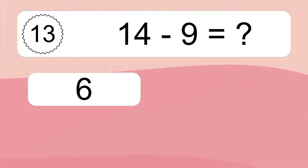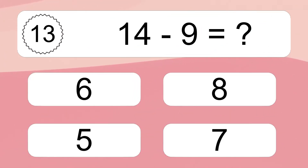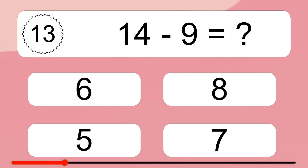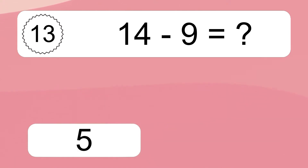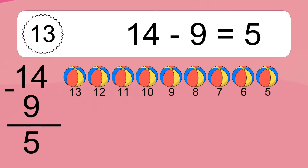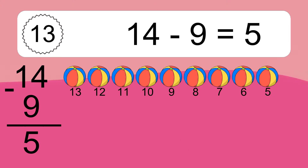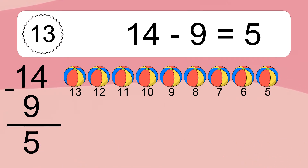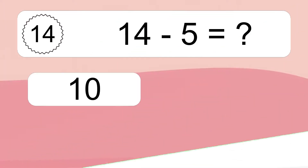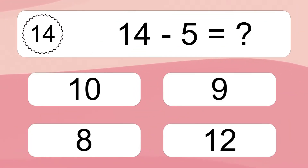14 minus 9 equals what? 14 minus 9 equals 5. Let's count it: 13, 12, 11, 10, 9, 8, 7, 6, 5.